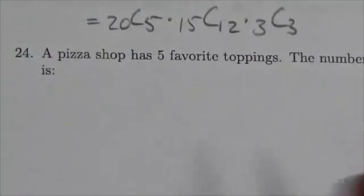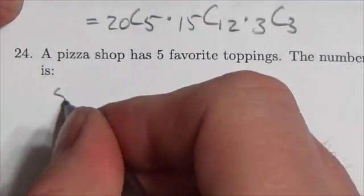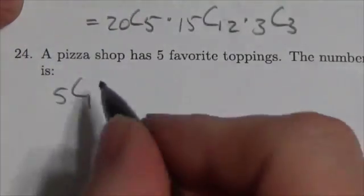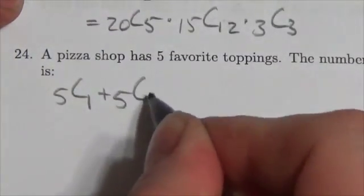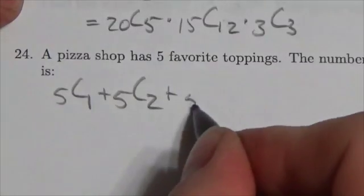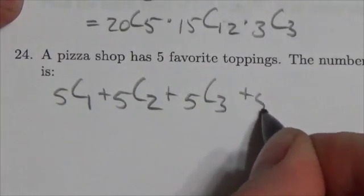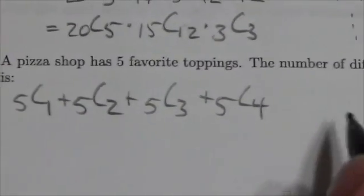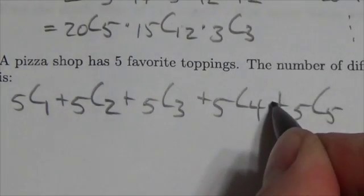Five different toppings, choosing one or more toppings. I could choose one of those toppings, or I could choose two of those toppings, or three of those toppings, or four of those toppings, or I could choose all five of them.